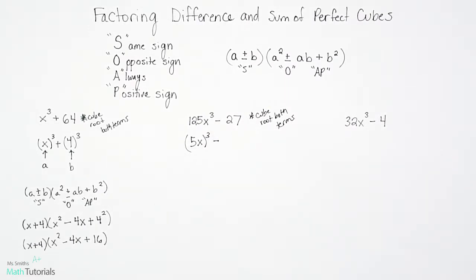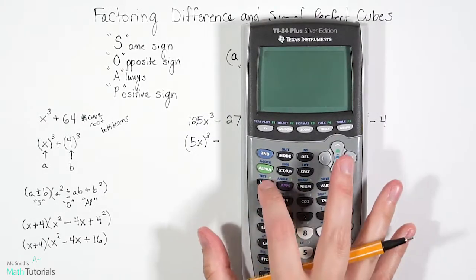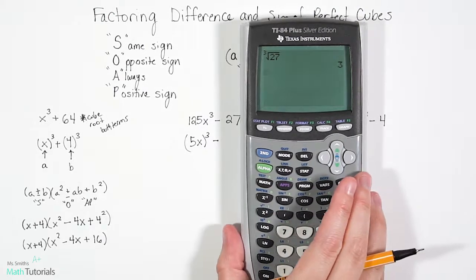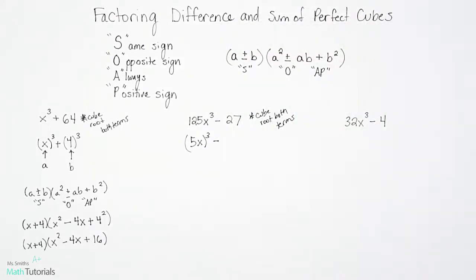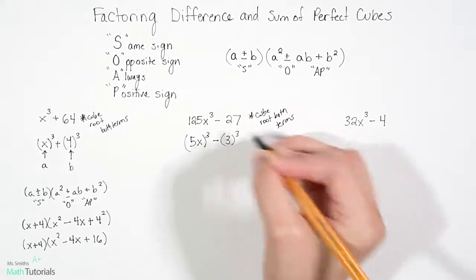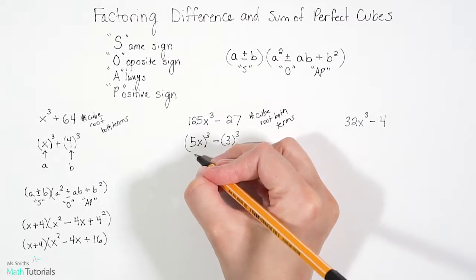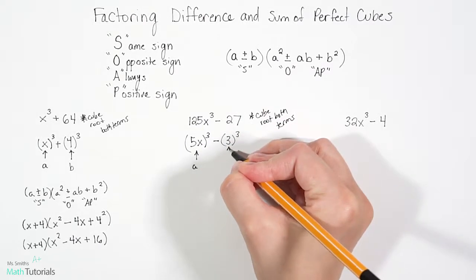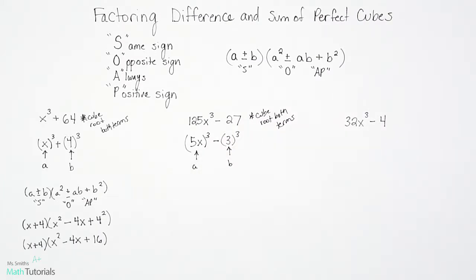And our cubed root of 27. So let's try that cubed root of 27. And we get 3. So 3 cubed would give us 27. So now what's in the parentheses? There's our a here, 5x. And our parentheses there, 3 is our b.